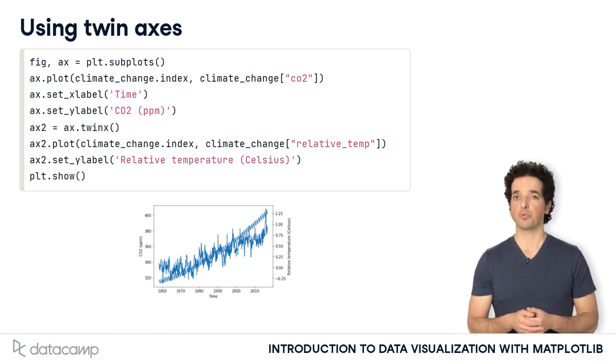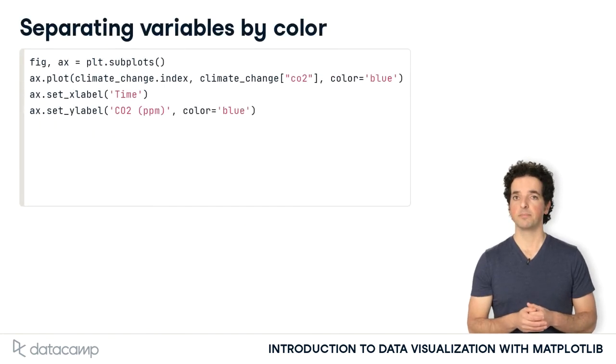But this is still not quite right. The two lines have the same color. Let's take care of that. To separate the variables, we'll encode each one with a different color.